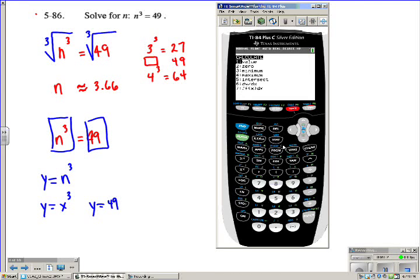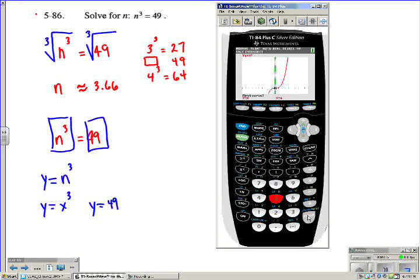Now remember the commands to find the intersection, second, trace, number five. And we're going to move it just a little closer.